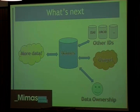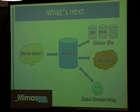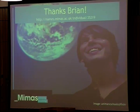Next steps: pull more data into our system to flesh out the existing records and create new records. Look at how we interoperate with other identifier providers like ISNI and ORCID. Get people using our identifiers and API, and also look at how we can get authors taking ownership of the data — perhaps providing information and managing it themselves.